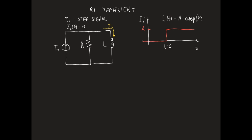This means that before the arrival of the step signal, there is no magnetic field inside the inductor. Therefore, for T smaller than zero, Ii is equal to zero, and IL is also equal to zero. So the current IR flowing through the resistor, which according to Kirchhoff's law for currents is given by Ii minus IL, is equal to zero.